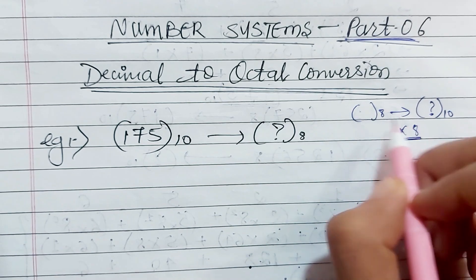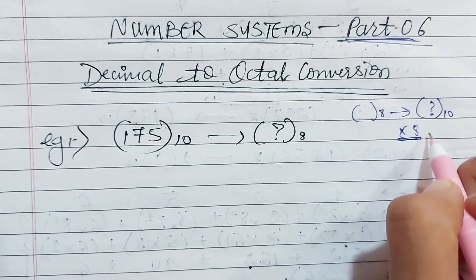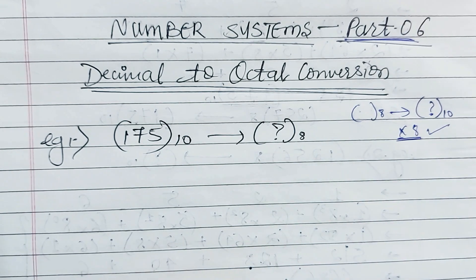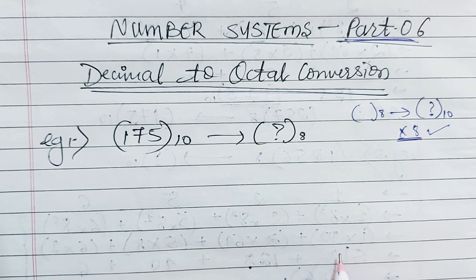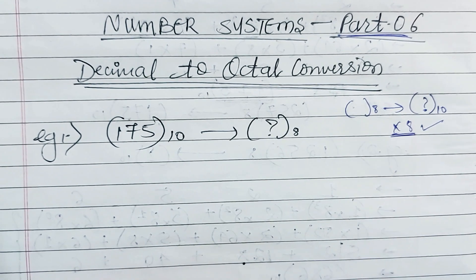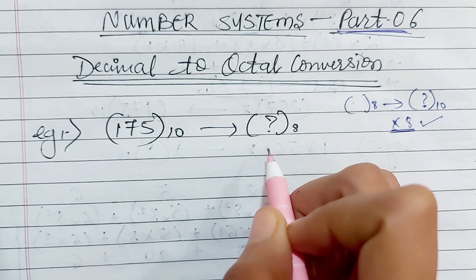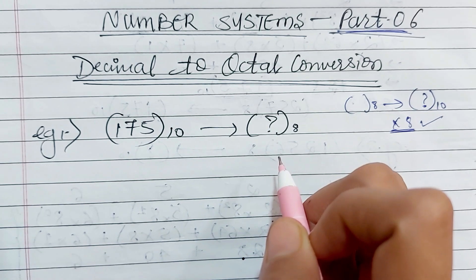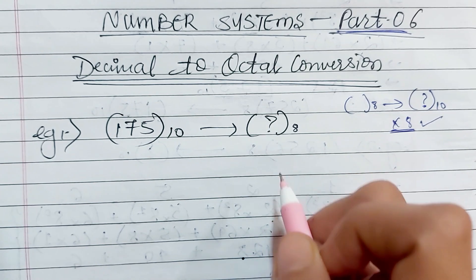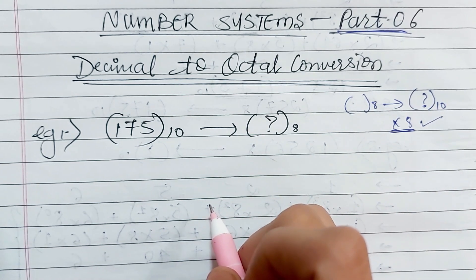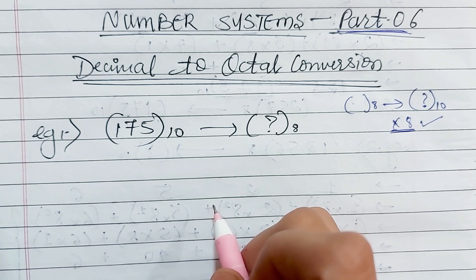If you haven't learned this conversion, you will get the link on the i-button. In the description box, you can also see the playlist. So let's continue. Let's start with the first example, in which we want to convert 175 to its octal equivalent. If you understand the concept, please like this video and give your feedback in the comments section.